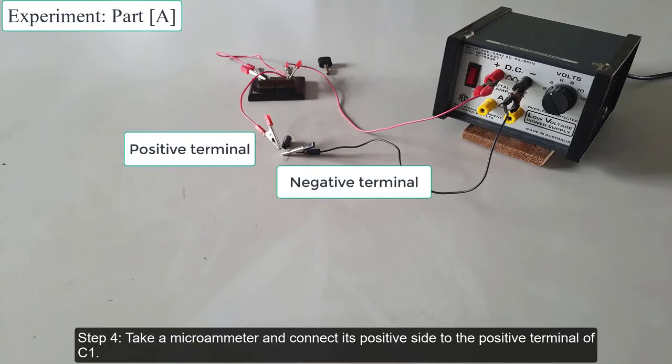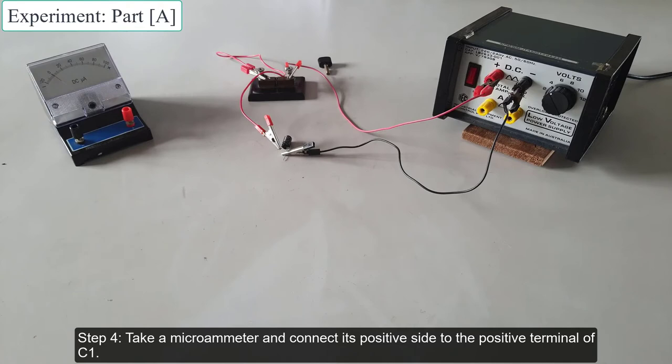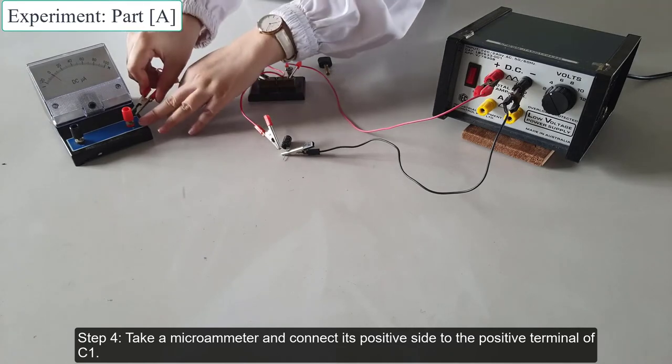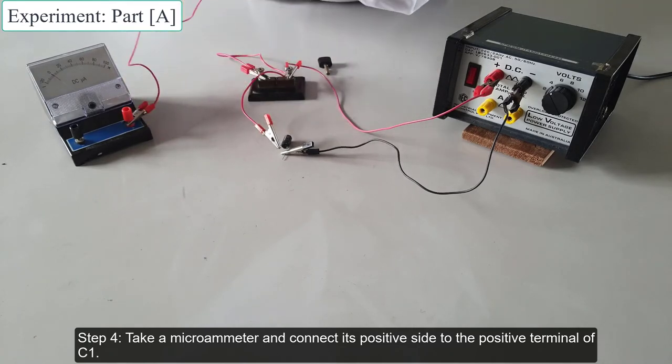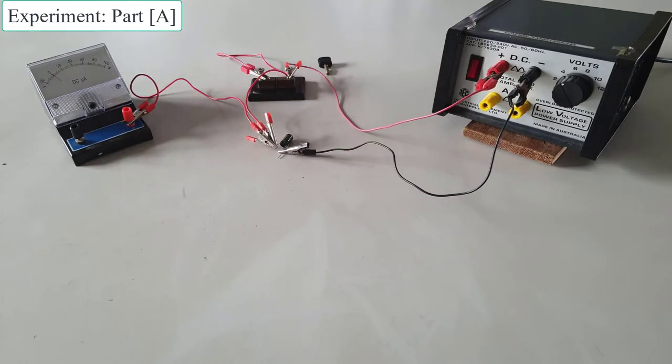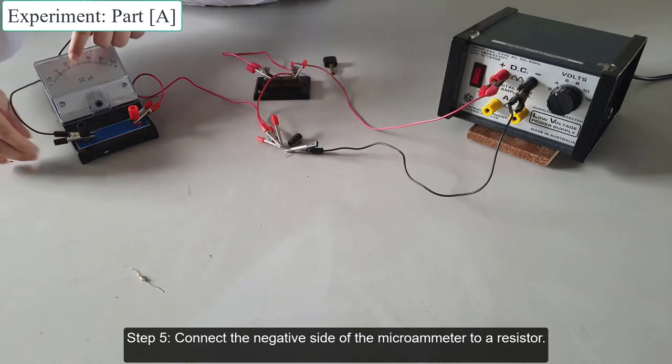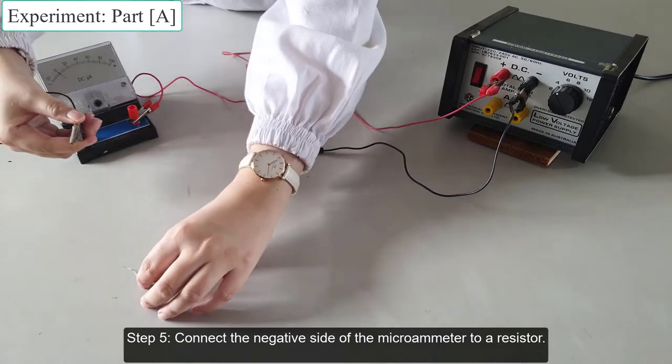Take a microammeter and connect its positive side to the positive terminal of C1. Next, connect the negative side of the microammeter to a resistor.